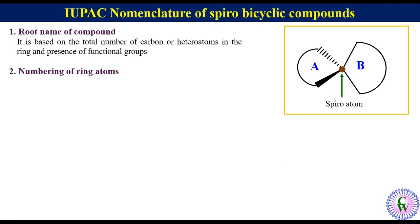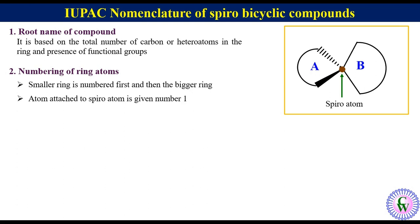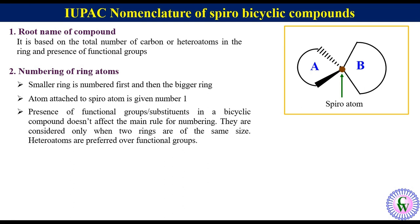Second, numbering of ring atoms. The smaller ring is numbered first and then the bigger ring. The atom attached to the spiroatom is given number one. The presence of functional groups or substituents in a bicyclic compound does not affect the main rule of numbering. They are considered only when the two rings are of the same size. In that case, heteroatoms are preferred over functional groups.